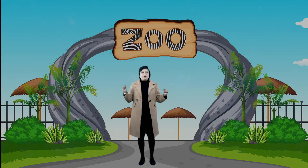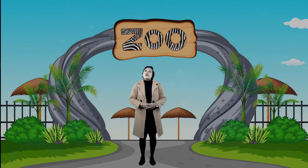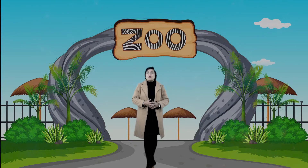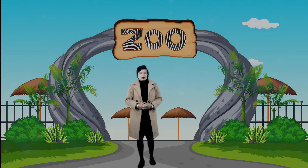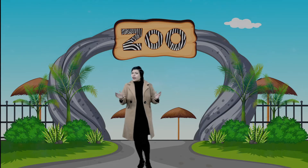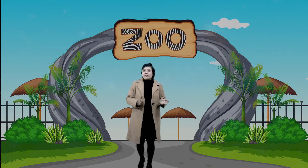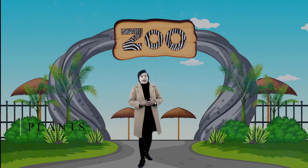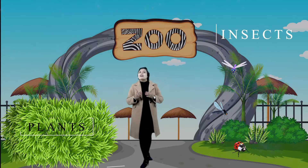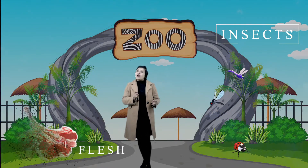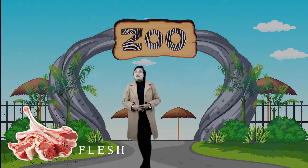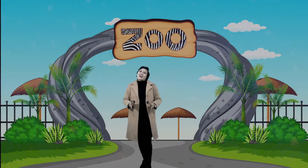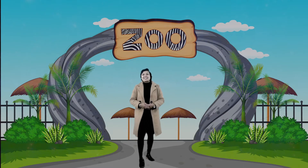Welcome to the world of the zoo! Today we are going to see different animals to know what kind of food they eat. We all know that different animals eat different food. Some eat plants, some eat insects, some eat flesh of other animals. So, are you all excited to know about this more? Then let's get inside the zoo.